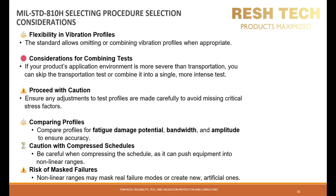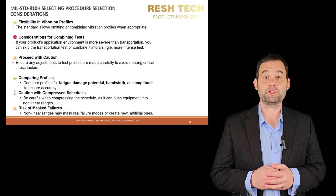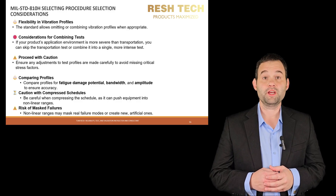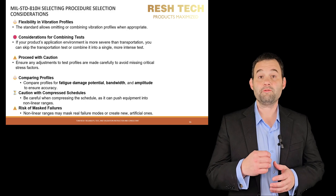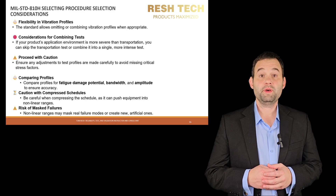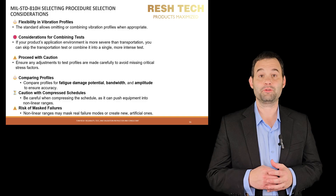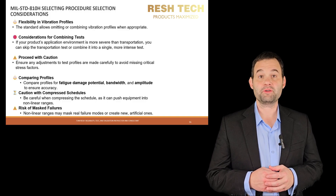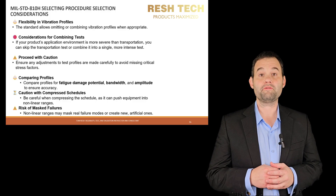Let's look at procedure selection considerations. The standard allows you to omit or combine vibration profiles. If it makes sense — for instance, if your product's application environment is more severe than transportation — you might skip the transportation test or fold it into a single more intense test. But do this with caution. Make sure to compare procedures for fatigue damage, bandwidth, and amplitude. Be careful if you compress the schedule too much, because pushing equipment to non-linear ranges can either mask a real failure mode or produce an artificial failure mode.